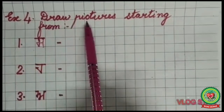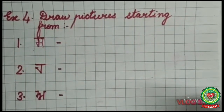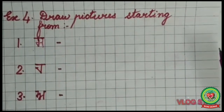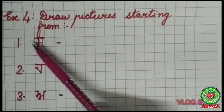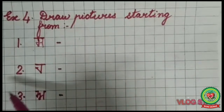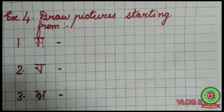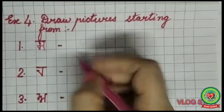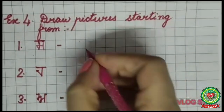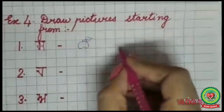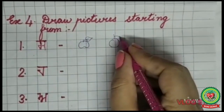Exercise 4 is 'Draw pictures starting from'. Here we have to draw pictures of things that start from the given letters. For example, Sassa is given — I will draw a picture of something that starts from Sassa. Can you name two things? Sassab, Sassasantara, Sassaslate — so many things! I will draw a picture of Sib here, or you can draw Santara.